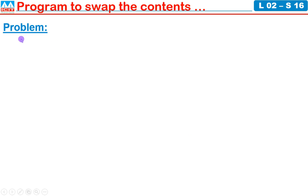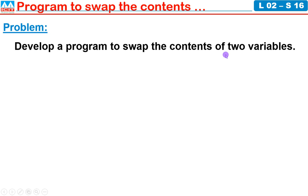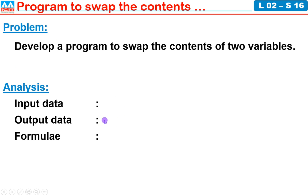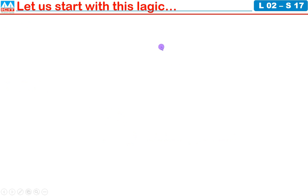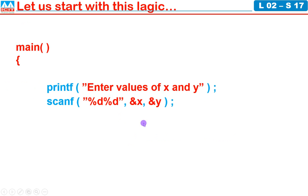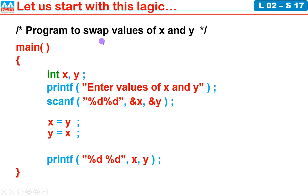Program to swap the contents. This is our second program. Let us look at the problem. Develop a program to swap the contents of two variables. That means we need to interchange the contents of two variables. In the analysis, the output must be X and Y. You need to apply any suitable logic. The input must be X and Y. Let us start with this logic. Program begins with main, open brace, printf Enter values of X and Y. Scanf percentage d percentage d address of X address of Y. X equal to Y, Y equal to X. Printf percentage d percentage d X comma Y. Closing brace. You need to define the variables int X Y.